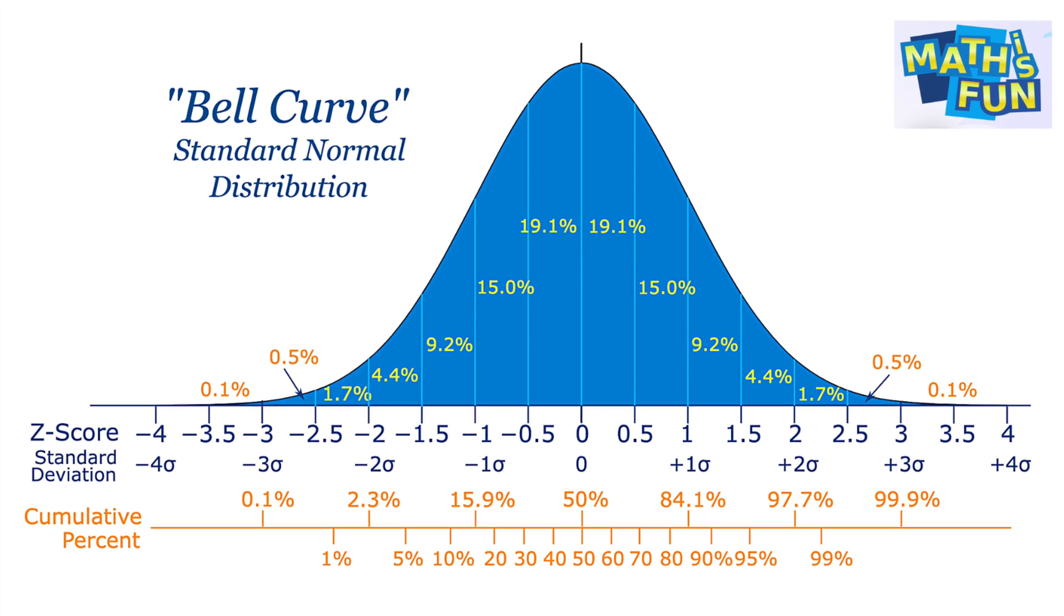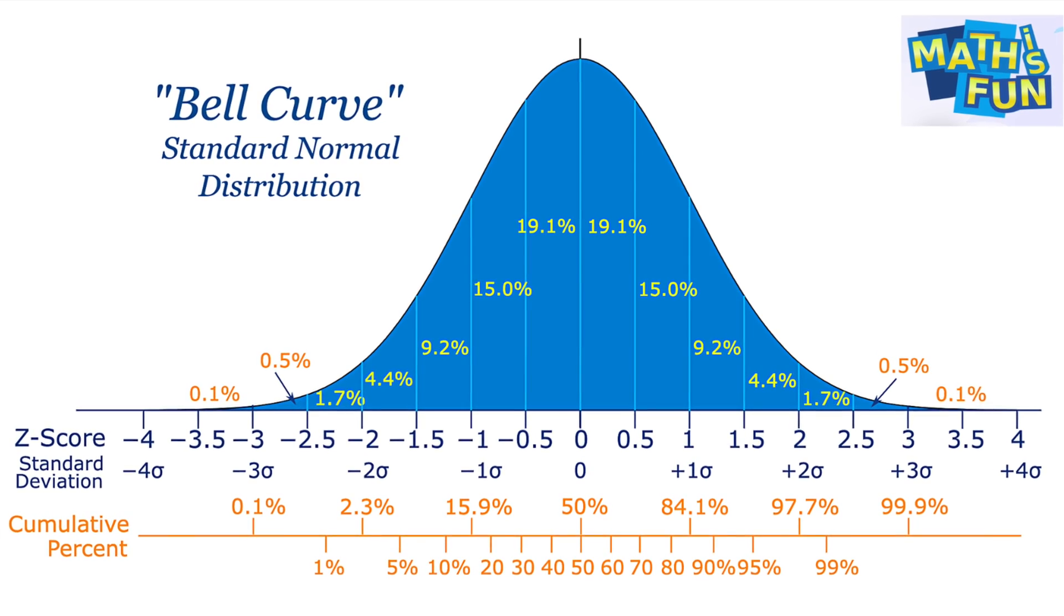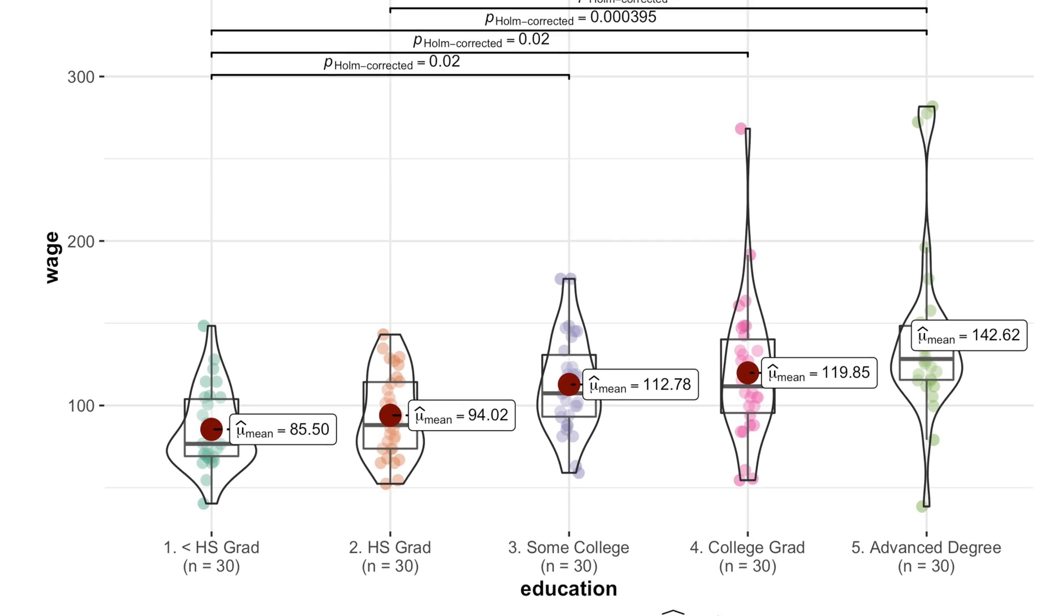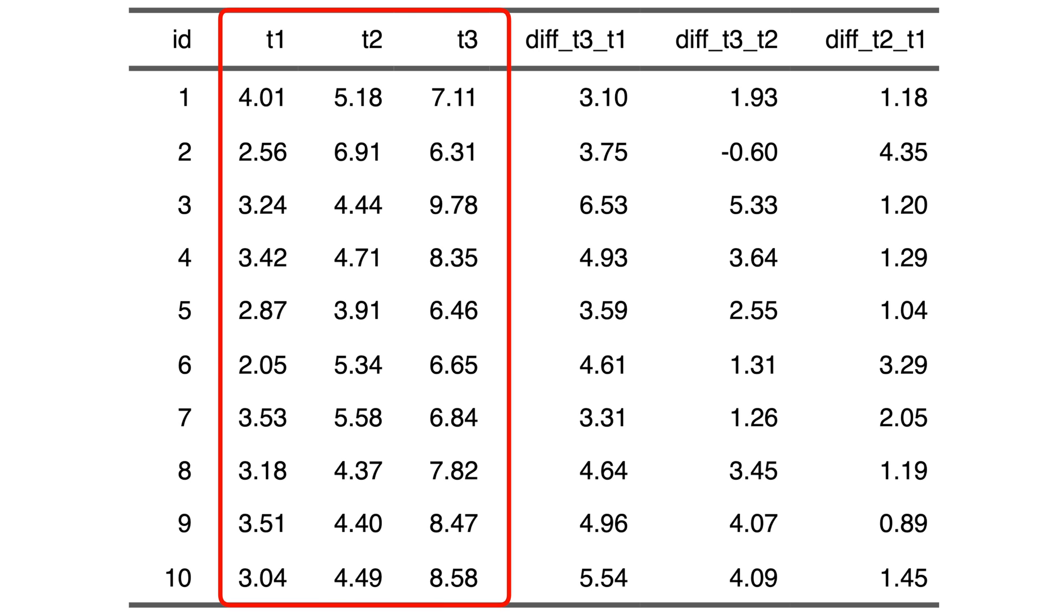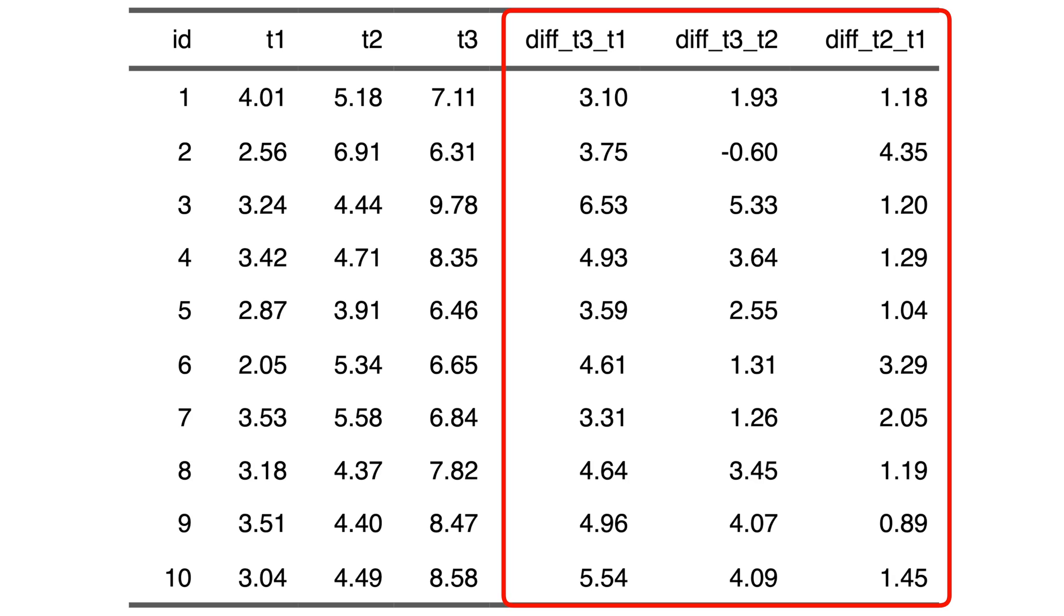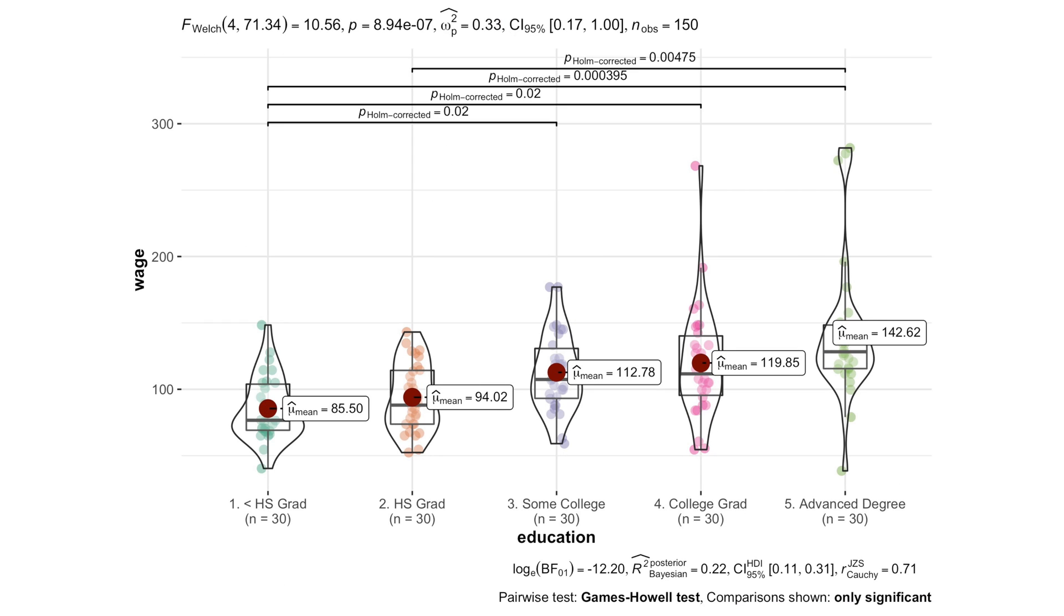ANOVA also needs the data to be normally distributed, or bell-shaped, but often compares a lot of groups, so that checking normality of separate groups for usual ANOVA, or differences between those groups for repeated measures ANOVA, might be cumbersome.